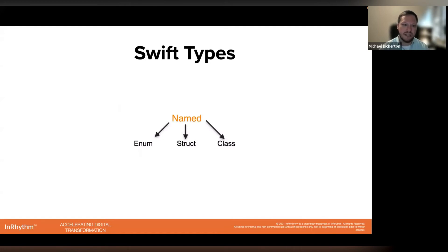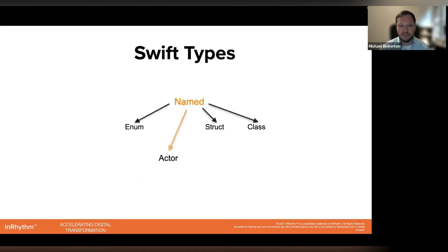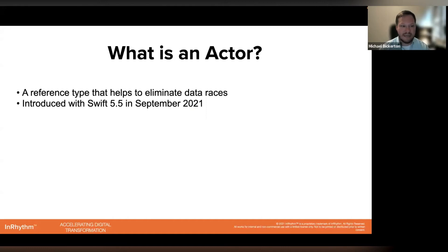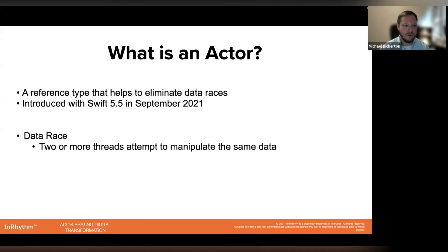Out of the box, Swift provided a handful of named types like enums and structs, which are value types, and classes, which are reference types. However, a new foundational type was recently introduced: the actor, the topic of tonight's discussion. In summary, an actor is a reference type like a class that helps to eliminate data races. It was introduced last fall with Swift 5.5 as part of several concurrency updates that shipped last year, such as the previously mentioned async/await.